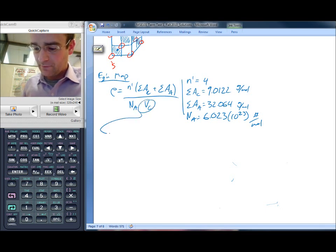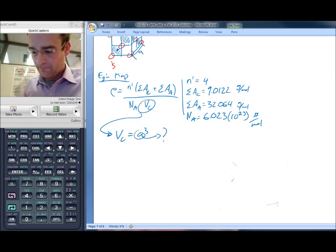So what we don't yet have is the volume of the unit cell. We know that the volume of the unit cell is going to be equal to A cubed, where the lattice parameter is A. But we don't yet have A. So that's what we need to get.